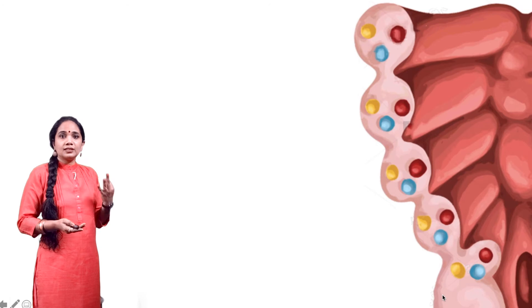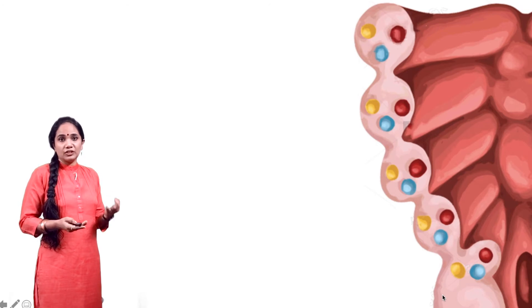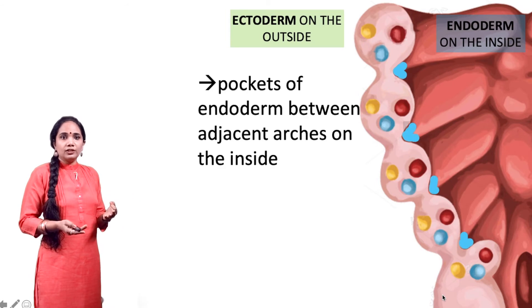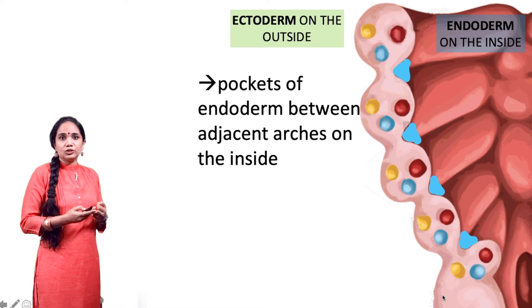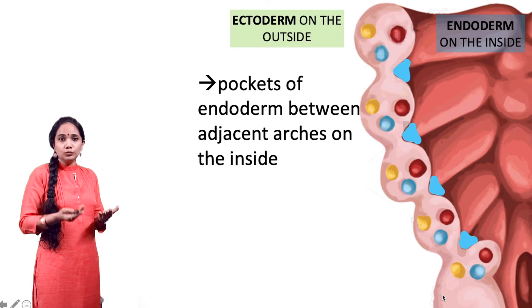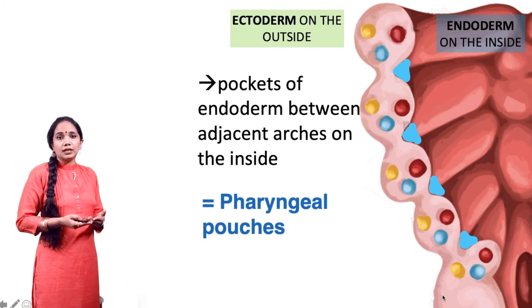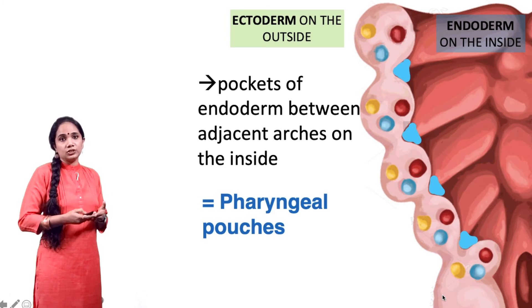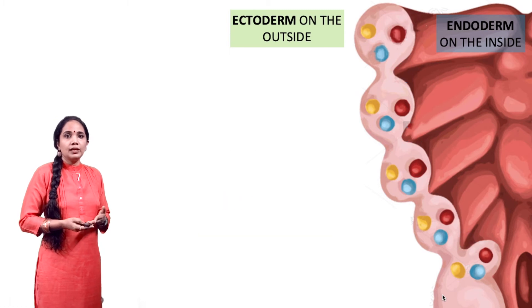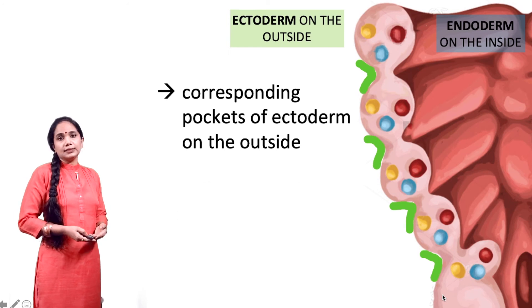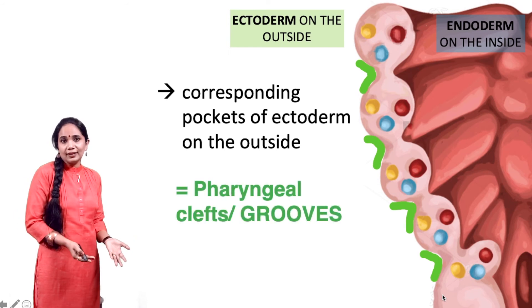Apart from that, there are three more terms you need to know when starting to learn pharyngeal arches. The endoderm forms pockets between adjacent arches on the inside — you can see the blue pockets. These outpouchings are called pharyngeal pouches, which are basically extensions of the endoderm between adjacent arches on the inside. There are similar clefts formed by the ectoderm on the outside, and these are called the pharyngeal grooves or clefts.